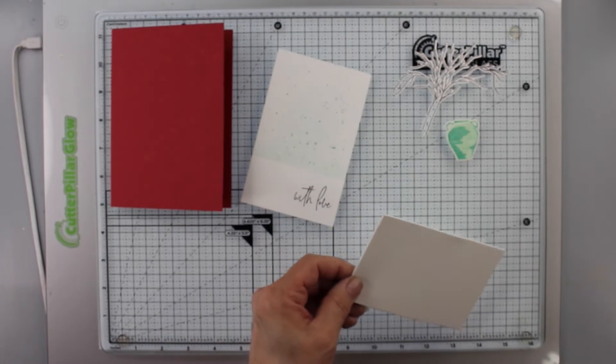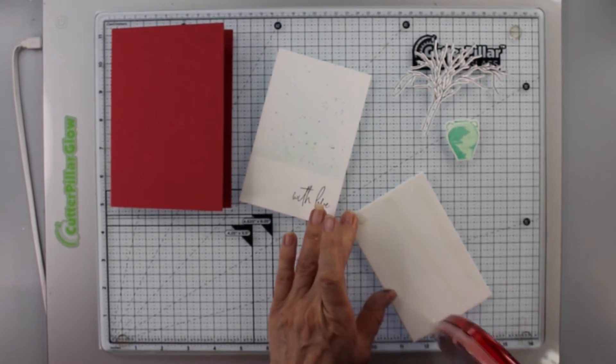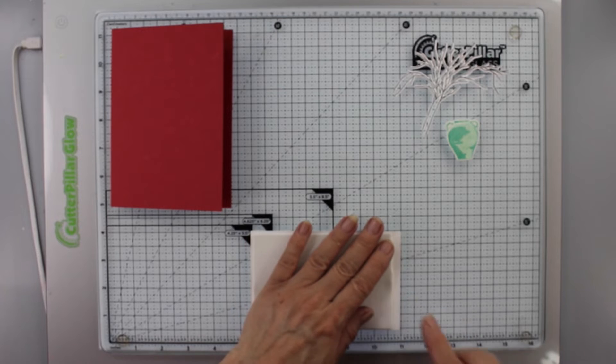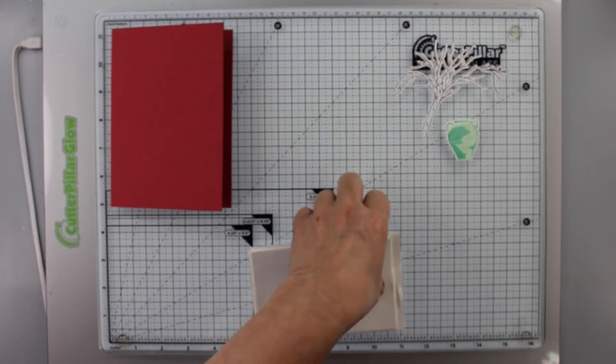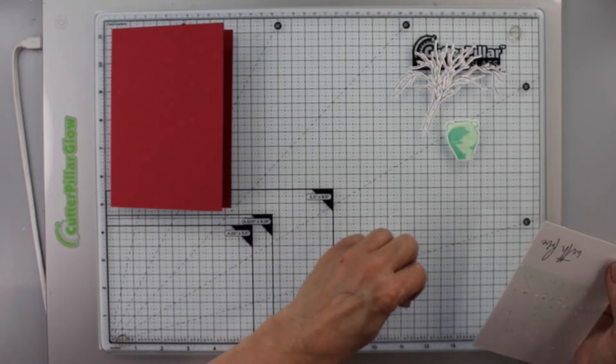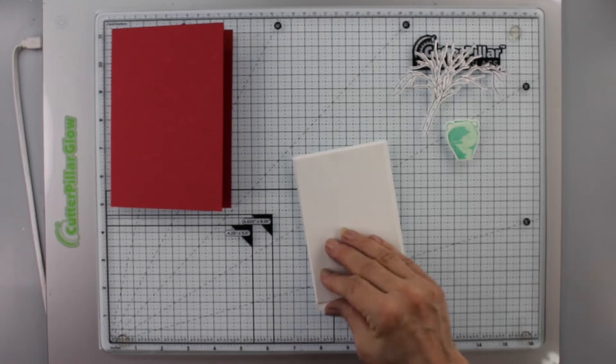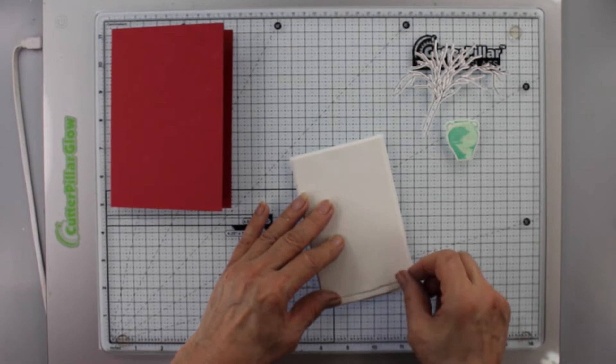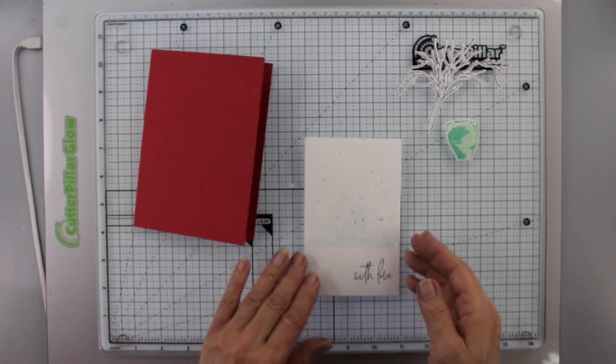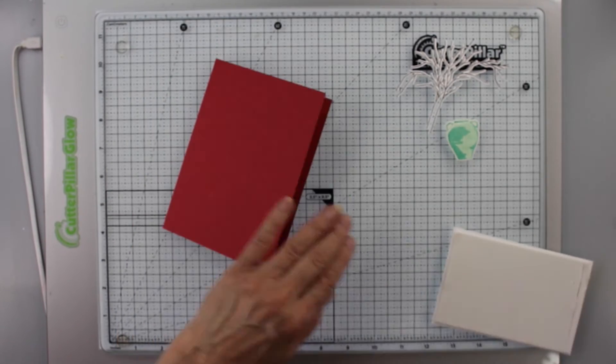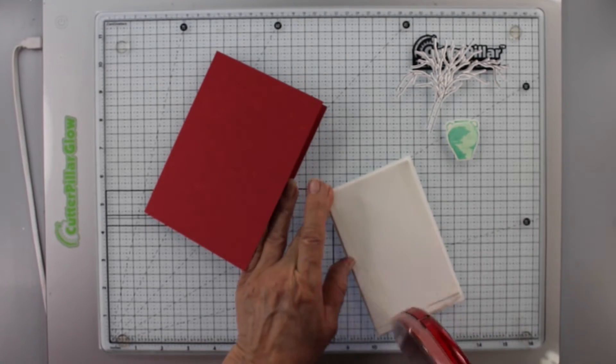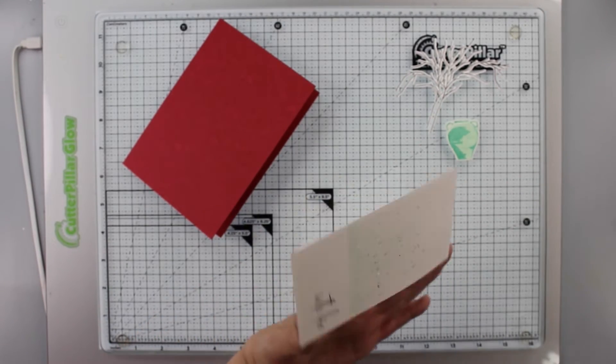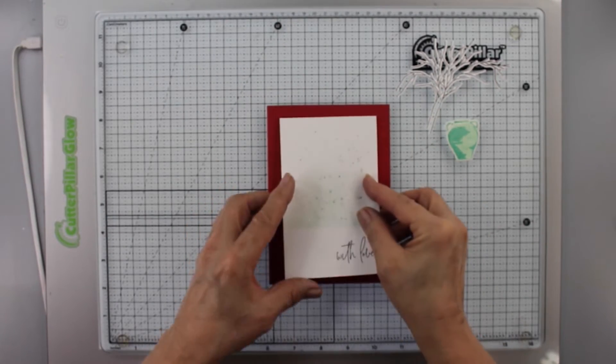I have some foam tape on the back of the branches and the pot. I'm going to put some double stick tape onto this piece of foam. This is so I can pop it up. You could use foam tape if you wanted to, but I'm going to use a sheet of foam. I'm just adding a little strip there because I wanted to have some support underneath. I'm just putting foam on the back of the white card panel so that it pops up. So now that works out.